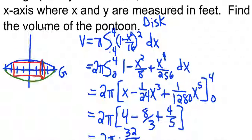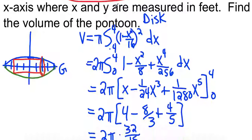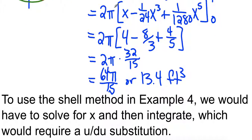So this function up here, you would have had to solve that for x. And then integrating it, it would have been doable. You would have had to use a u-du substitution for it. So this is definitely a case you can do both ways. Just the shell method would have been more difficult because it would have had a u-du substitution in it.